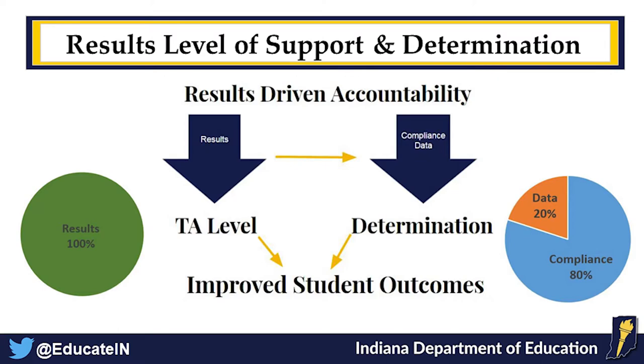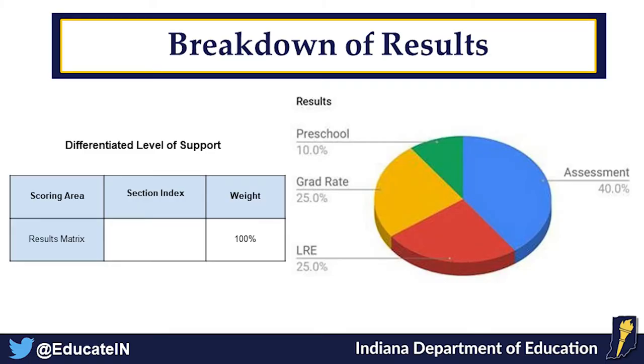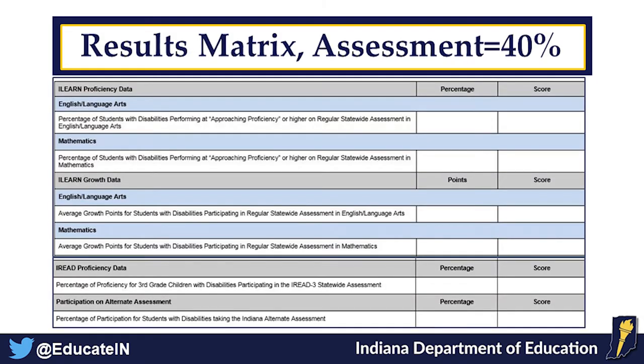All of the different results indicators together equal 100% and that defines your technical assistance level: level one, two, or three. I have another slide later showing how that breaks down. For compliance, we've added compliance components and data components. We must do compliance for six indicators — it's in statute. We also felt that timeliness and completeness of data has been an issue, so that's included. Those two things together define RDA for us.